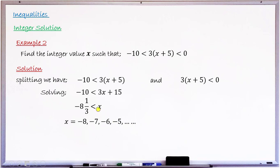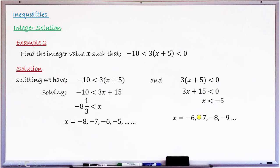Solving the second simple inequality, expanding gives 3x plus 15 less than 0. Shifting 15 to the right gives 3x less than minus 15, and dividing by 3 gives x less than minus 5. The integer values satisfying this are minus 6, minus 7, minus 8, minus 9, and so on — all integers smaller than minus 5.